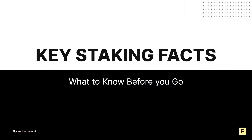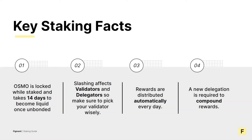Now that we know why to protocol stake Osmo, let's take a look at some key staking facts to keep in mind before staking Osmo. Osmo is locked while protocol staked, and when unbonding, it takes 14 days for your tokens to unbond, meaning they are not liquid or earning rewards for 14 days after you stop staking. There's no slashing for downtime and a 5% slashing for double signing. Rewards are automatically distributed daily, and a new delegation is required for compounding rewards.